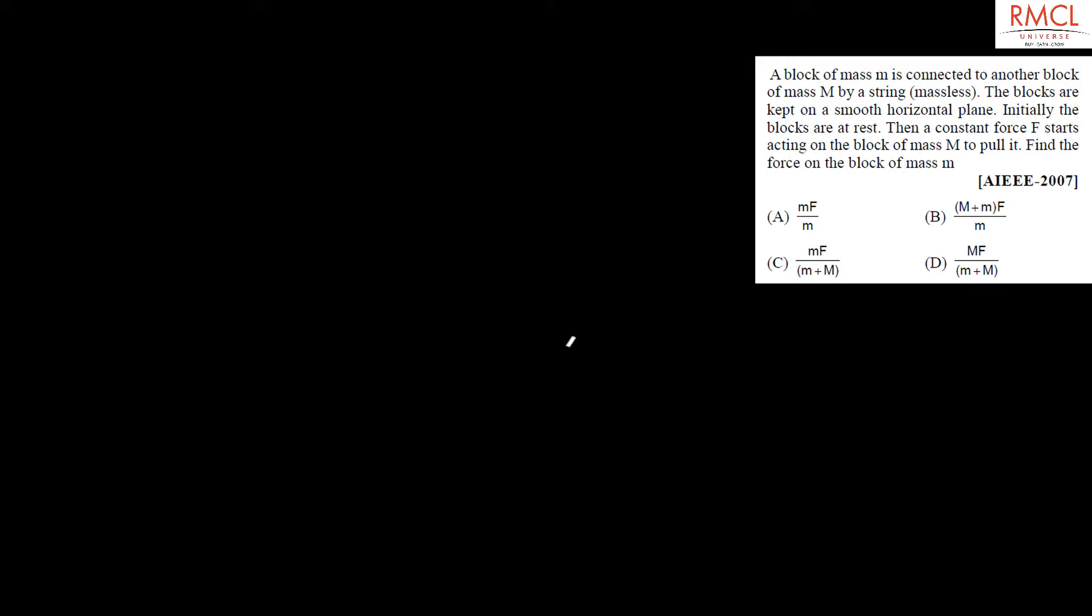The question is: a block of mass M is connected to another block of mass capital M by string. The blocks are kept on a smooth horizontal plane. Initially the blocks are at rest. Then a constant force F starts acting on a block of mass capital M to pull it. Find the force on the block of mass small m.